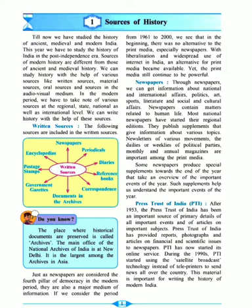Newspapers publish supplements that give information about various topics. The dailies or weeklies of political parties, monthlies, and annual magazines are important among the print media. A supplement is basically extra information — for example, a week's worth of information about a political party's activities. There is daily information, weekly programs, monthly updates, and annual reviews — that is how magazines and newsletters are printed.